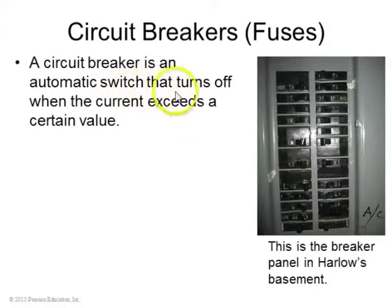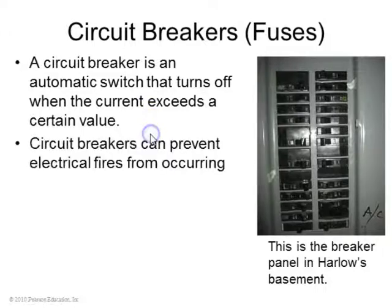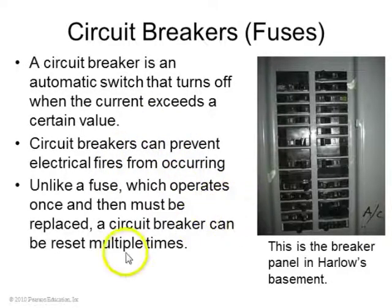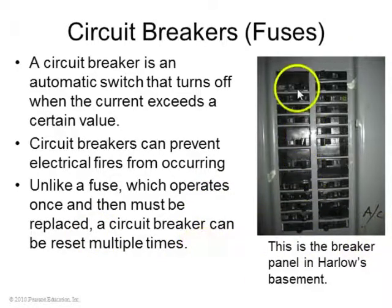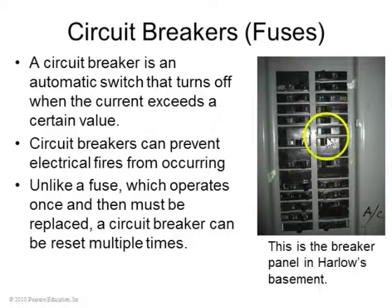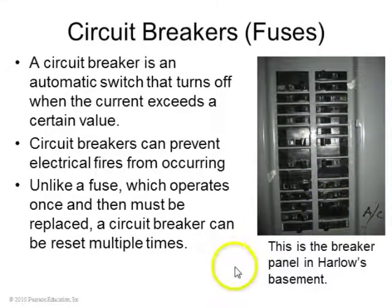A circuit breaker is an automatic switch that turns off when the current exceeds a certain value, and this can prevent fires from occurring. Unlike a fuse, which burns out once it operates, a circuit breaker can be reset multiple times. Here's a bunch of switches in the basement of a house, each one set to flip off if the current through the line exceeds a certain amount.